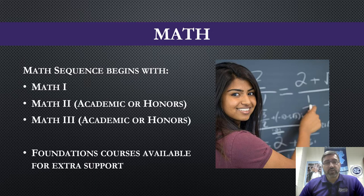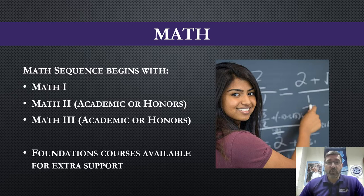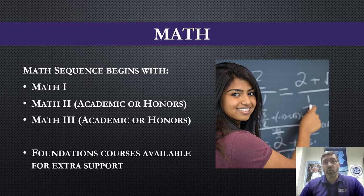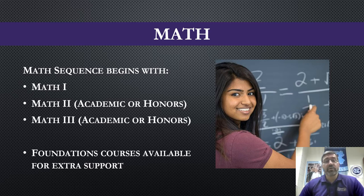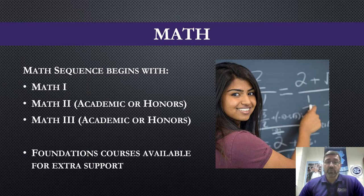There are four math credits required for graduation. Math 1 leads into Math 2, which leads into Math 3. At Math 2 and 3 there are academic and honors levels available. Also along the way, if you struggle with math, there are foundations courses you can take as an elective to help you prepare for the core math class. For example, sign up for Foundations of Math 2 and then also the Math 2 class. Foundations will be offered in the fall and Math 2 in the spring. You are not required to take foundations classes.